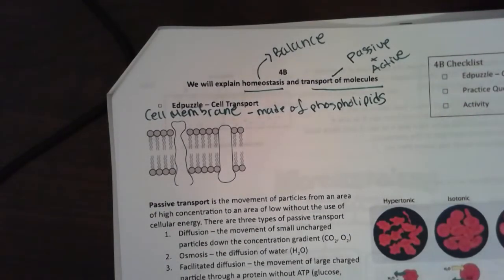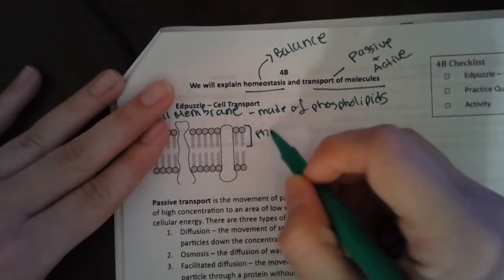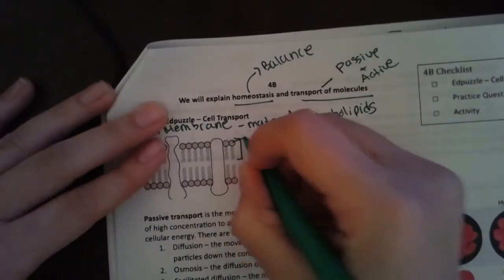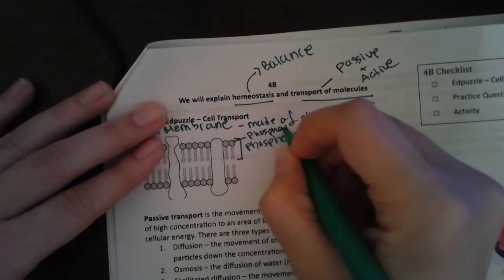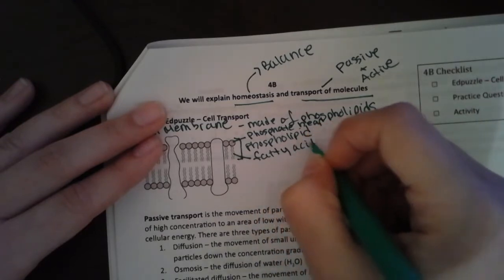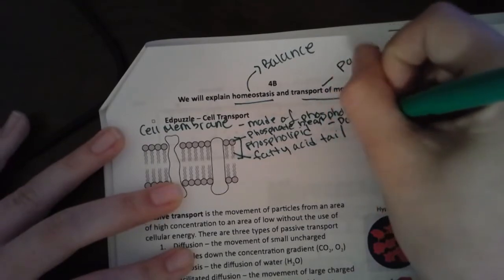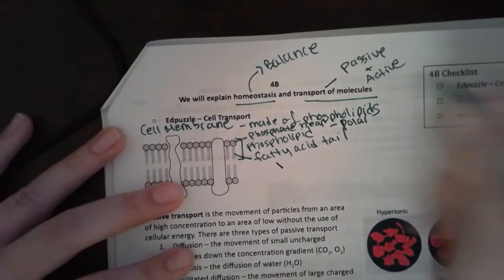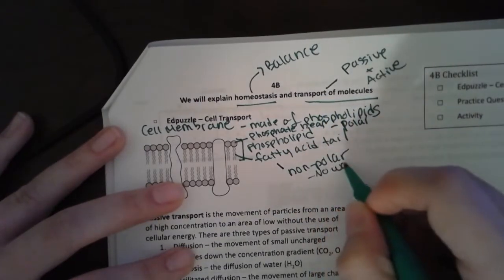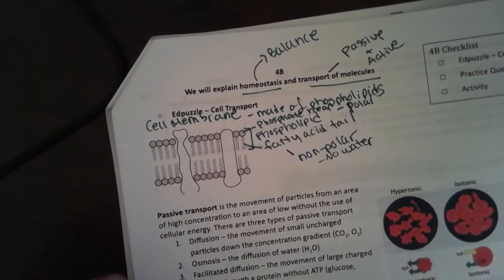This is one phospholipid. It is made up of a phosphate head and a fatty acid tail. The phosphate head is polar, that means that it likes water. The fatty acid tail is nonpolar, meaning that it does not like water. This is like we know that oils are fats. If you try to mix oil and water, it doesn't happen. That means that oil is nonpolar, doesn't like water.